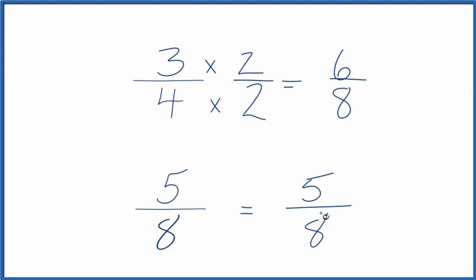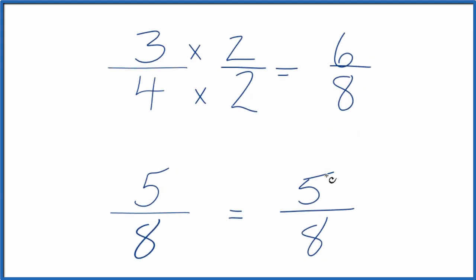But now, since the denominator is the same, we're going to compare the numerators. And when we do that, 6 is greater than 5. So 6 eighths, that's greater than 5 eighths, and therefore, 3 fourths is greater than 5 eighths.